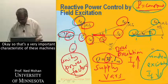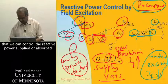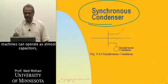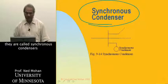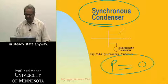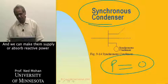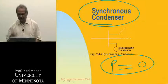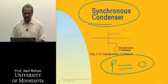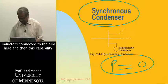That's a very important characteristic of these machines — we can control the reactive power supplied or absorbed. Quite often these synchronous machines can operate as almost capacitors, called synchronous condensers, where real power transfer is essentially zero in steady state. Because of the inertia of these machines they are able to supply some real power under dynamic conditions, giving better characteristics than simply connecting capacitors or inductors to the grid.